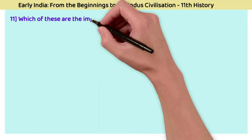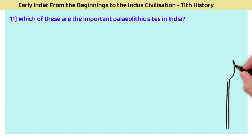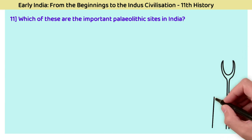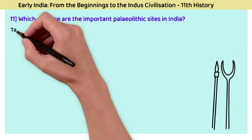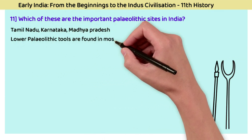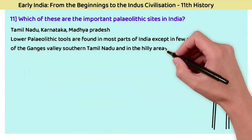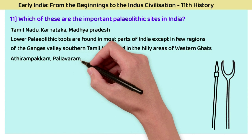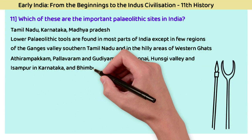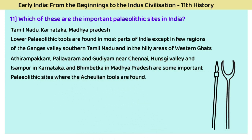Question 11: Which are the important Paleolithic sites in India? The answer includes Tamil Nadu, Karnataka, and Madhya Pradesh. Lower Paleolithic tools are found in most parts of India. Attirambakkam, Pallavaram, and Gudiyam near Chennai; Hunsgi Valley and Isampur in Karnataka; and Bhimbetka in Madhya Pradesh are some important Paleolithic sites where Acheulian tools are found.